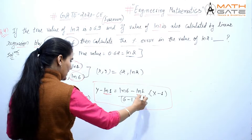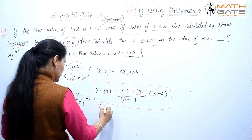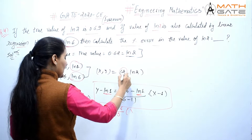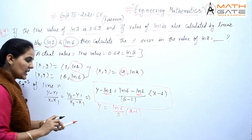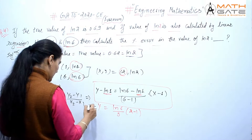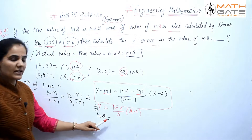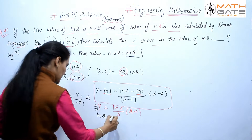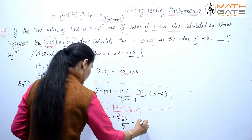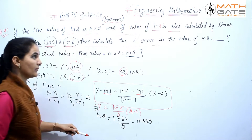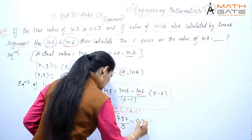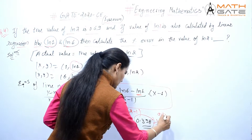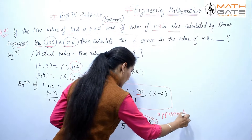Since ln1 = 0, the equation simplifies to: y = (ln6 / 5) × (x - 1). Substituting x = 2: y = ln6 / 5 × 1. Now ln6 = 1.792, so ln6 divided by 5 gives us 0.358. This 0.358 is our approximate value of ln2.